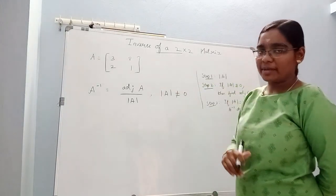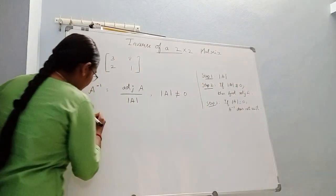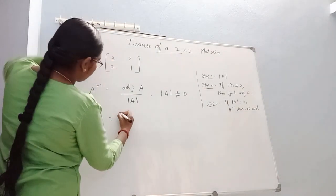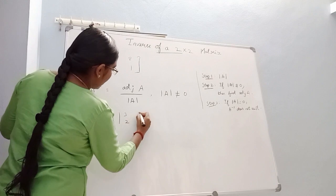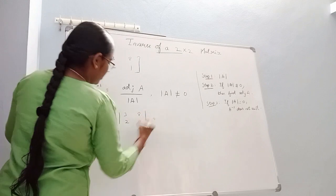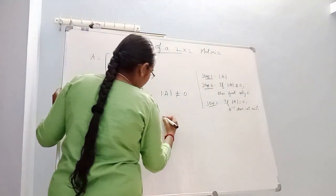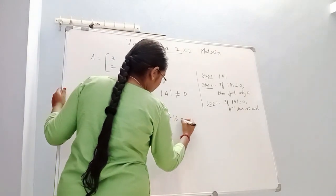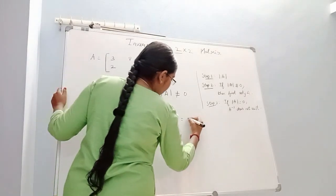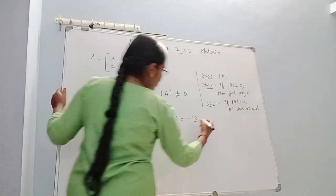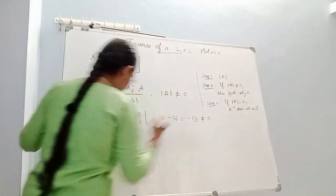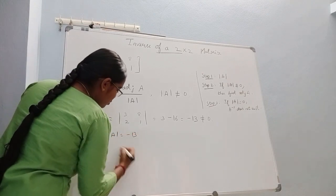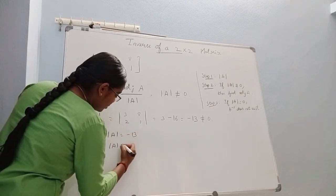First, what do you do? Find the determinant. So determinant of A for the matrix [3, 2; 8, 1] equals 3×1 minus 8×2, which is 3 minus 16 equals minus 13, which is not equal to 0.